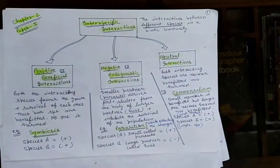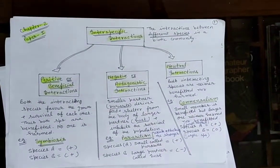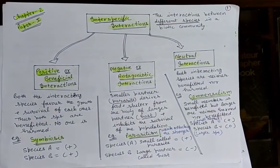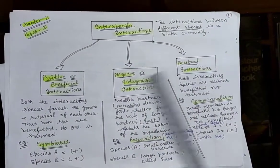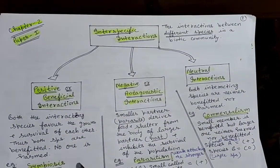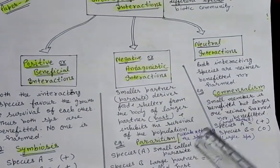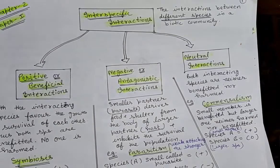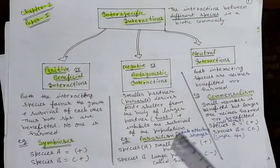Good afternoon students. In our last lecture we started chapter 2, which is interspecific interactions. Let's do a quick recap. We studied what is meant by interspecific interactions and its types. There are 3 types: positive or beneficial interactions, with symbiosis as an example; negative or antagonistic interactions, with parasitism as an example; and neutral interactions, whose example is commensalism. We also began elaborating on parasitism.